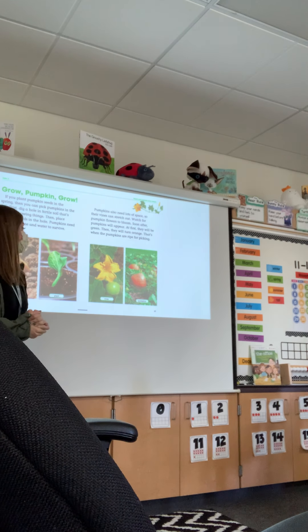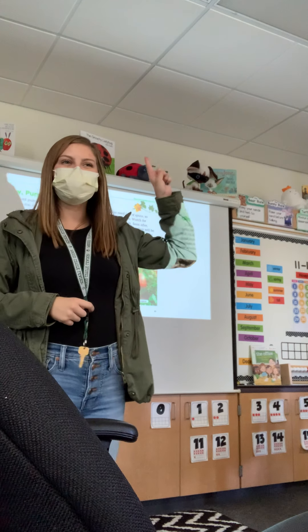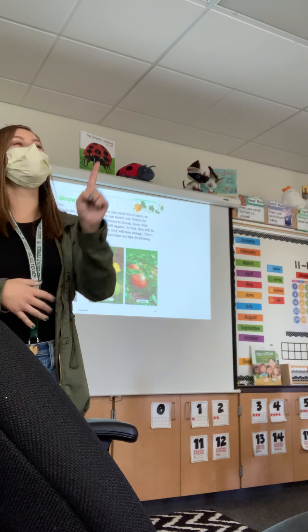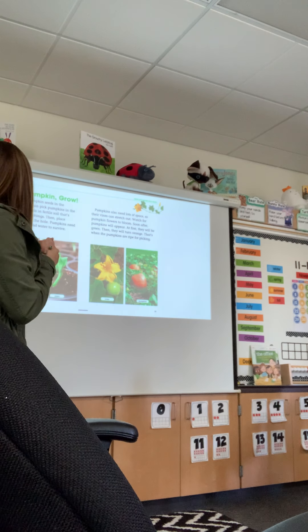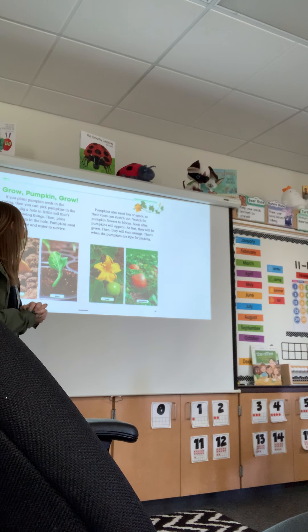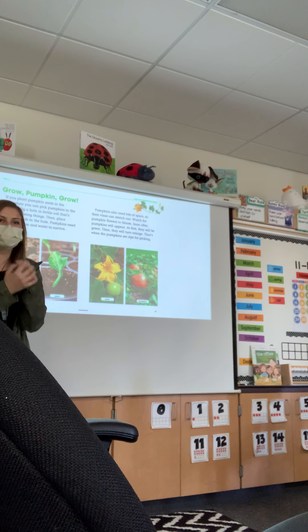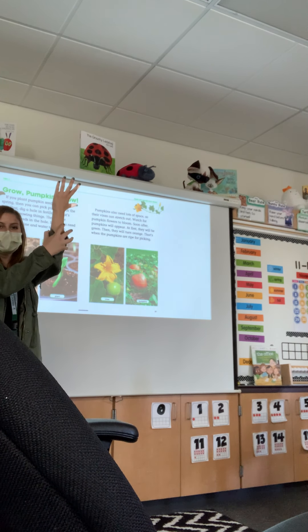Then place pumpkin seeds in the hole. Pumpkins need lots of sunshine and water to survive. What does it need to survive? Victoria, water. And what else? Sunshine. Pumpkins also need lots of space so their vines can stretch out. Remember how we do that stretch? So it starts as a seed, then a plant comes out, and then the vines come out. The big vines stretch out — they need a lot of space.